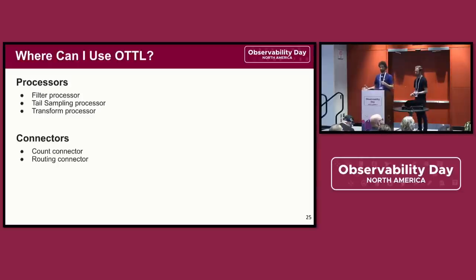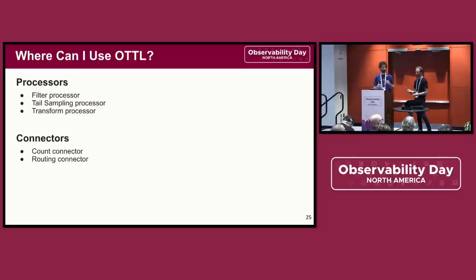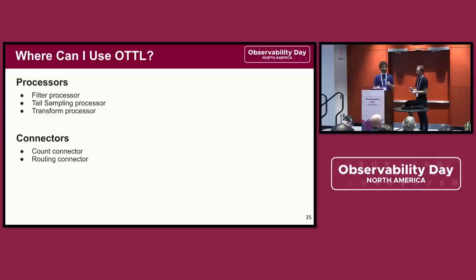So where can you use OTTL? It's available in several processors already, with the emphasis on the transform processor being the place that actually does transformation of telemetry. The filter processor and the tail sampling processor use OTTL conditions to make decisions. The filter processor uses conditions to determine when to drop data, and the tail sampling processor can use OTTL conditions to determine when to sample a trace. The routing and count connectors can also use OTTL conditions to make decisions. Be on the lookout for more components to start using OTTL conditions, as it's one of the ways we hope to start standardizing configuration between processors. If you've got a custom component and think you could take advantage of OTTL, it's available as a package ready for use, and it even supports custom functions should you have a really specific need.